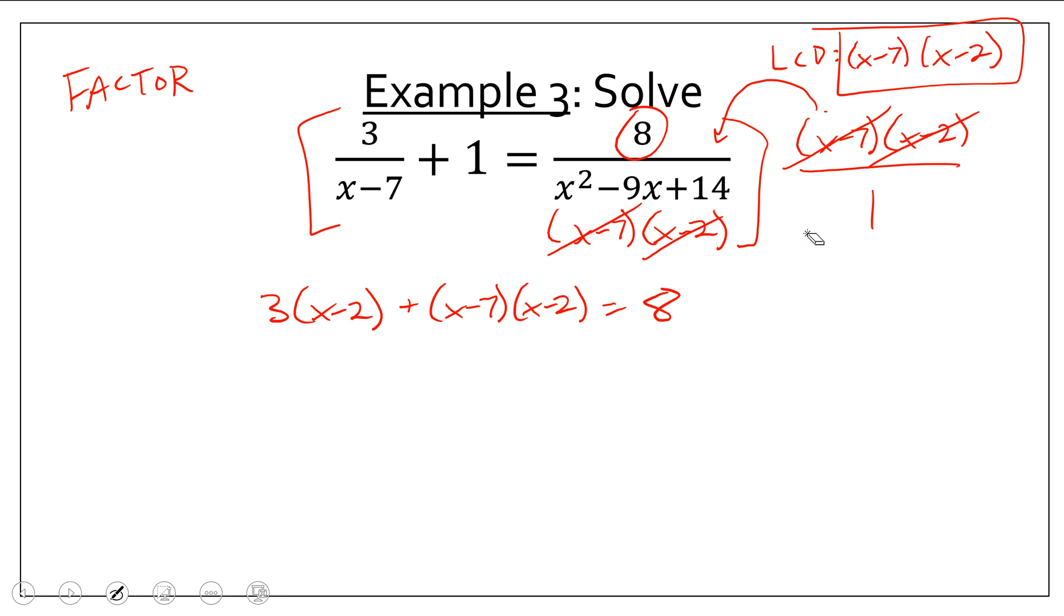Okay. So, let's go on and clean up some things. I need to distribute here. I need to FOIL here. So, x squared minus 2x minus 7x plus 14 equals 8. Okay. Now, I need to make a decision. Am I doing isolating x or am I quadratic-ing? Since I have two different kinds of x's, I need to quadratic.